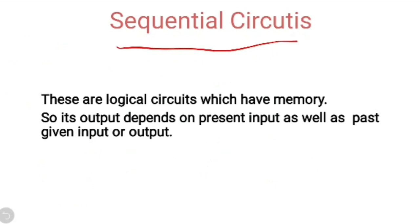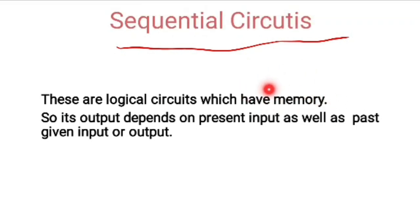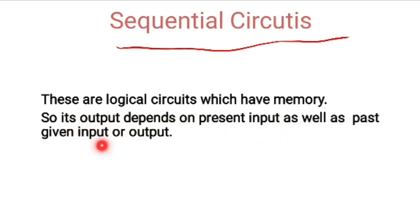Now, the sequential circuit — sequential circuit which does have memory. So the output may depend on the present given input as well as the past given input and output. Due to memory, they can store the data, and whatever the past given input as well as output, that also depends on that. So that's why that type of circuit is called as the sequential circuit. These are the logical circuits which have memory, so its output depends on present input as well as past given input or output.